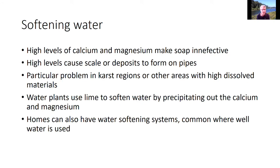Softening water: high levels of calcium and magnesium make soap ineffective, and they can also cause scale and deposits that form on pipes, making your plumbing wear out quicker as well as the distribution system and pipes coming into houses. This is a particular problem in Karst regions or other areas with high dissolved mineral content. Water treatment plants use lime to soften water by precipitating out the calcium and magnesium. Additionally, some private homes have water softening systems, which is common where well water is used.